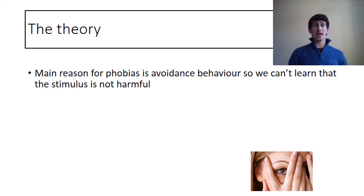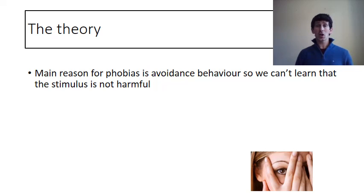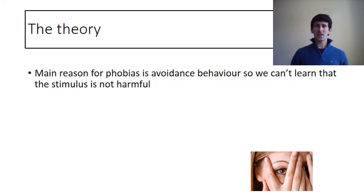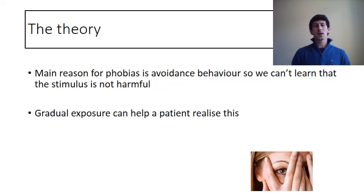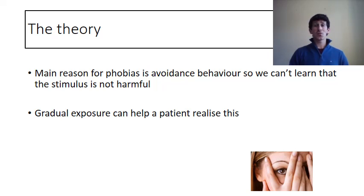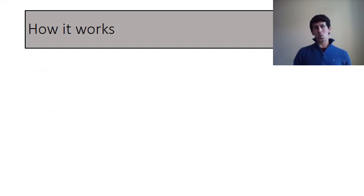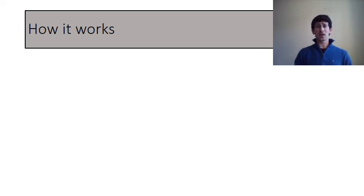The behavioral explanation states that we mainly have a phobia because of avoidance behavior. With avoidance behavior, we can't learn that a phobia is not really that harmful. Think of Mr. Hastings and the spider — he avoids them, so he can never be around spiders to see that they don't really pose any danger to him. The idea of gradually exposing someone to their phobia helps them realize that the phobic stimulus isn't actually dangerous or something to be scared of at all.